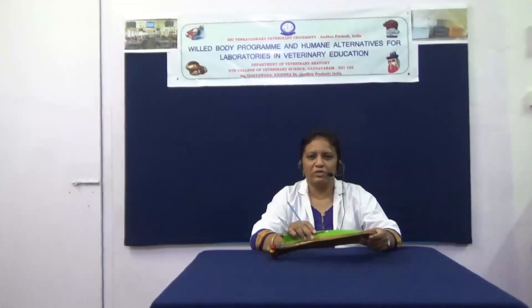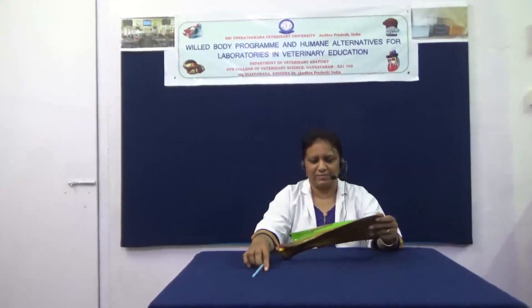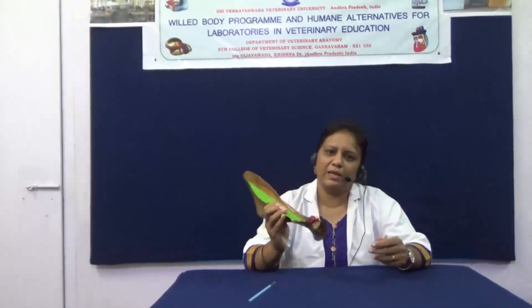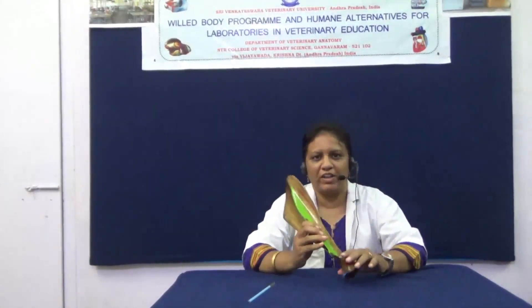Today we are going to discuss about the scapula of the ox. This is the scapula of the ox. It is a flat, triangular bone situated on the antero-lateral aspect of the thoracic region. When you come to the direction, it is directed obliquely downwards and then forwards.